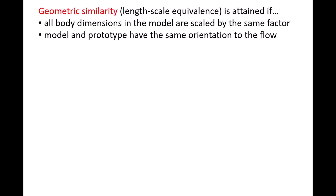Geometric similarity can be thought of as length scale equivalence between the model and prototype, because the ratio of any length in the model, Lm, to the length in the prototype, Lp, is constant, and we will call that constant lambda L.